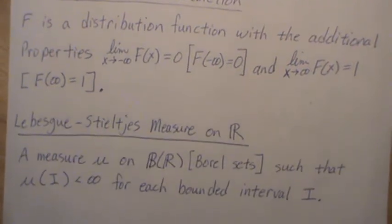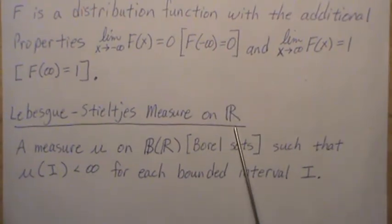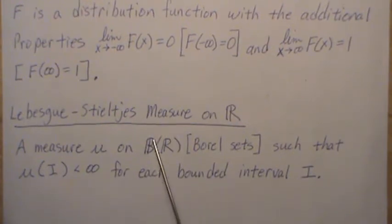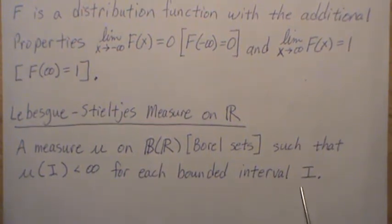Lebesgue-Stieltjes measure on the real number line is a measure μ on the Borel sets, and the Borel sets is a minimum sigma field over the right semi-closed intervals, and it's such that μ(I) is finite, and that's for any bounded interval I. That's a Lebesgue-Stieltjes measure on R.